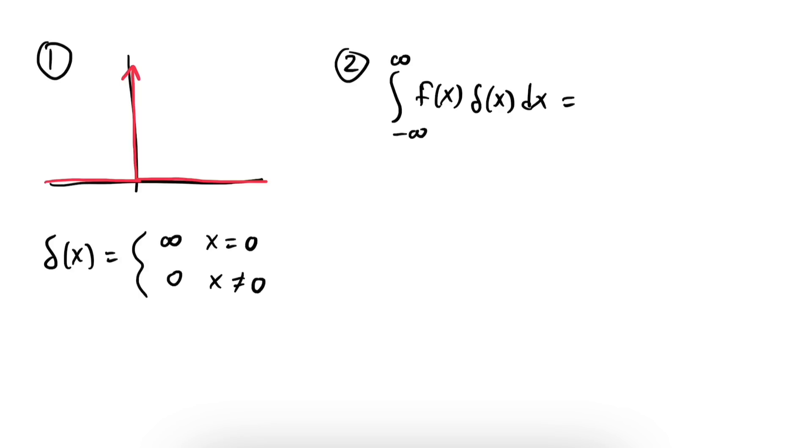The typical way the Dirac delta is described is pretty loose and informal. It's supposedly a function that's zero everywhere except at x equals zero, where it's infinite. It also satisfies the sifting property, which says that multiplying it by a function f and integrating extracts the value of f at zero. Regrettably, this property is often presented as an afterthought, when in reality it's the only characterization that gives us something to work with.